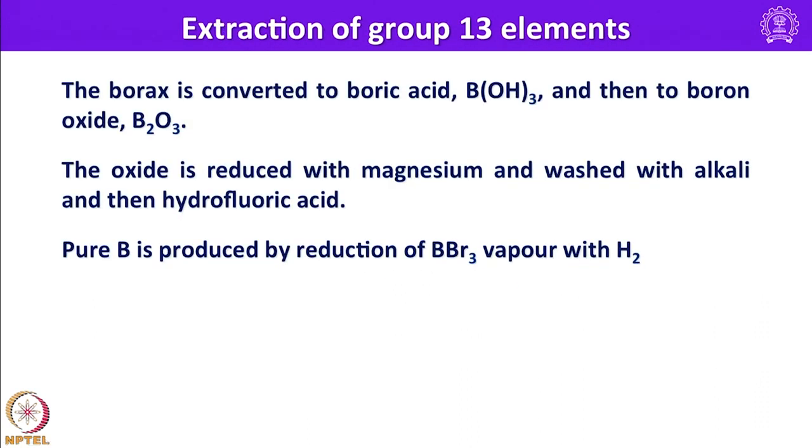Let us look into the extraction of this element. To begin with, let us consider boron. Here the borax is converted into boric acid. The borax is first converted to boric acid by treating with sulfuric acid and then to boron oxide that is B2O3. The oxide is reduced with magnesium and washed with alkali and then hydrofluoric acid. If you want extra pure or ultra pure boron one can prepare by reducing boron tribromide with hydrogen in vapor phase. Take the vapors of boron tribromide and react this one with gaseous H2 to get the pure boron.